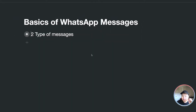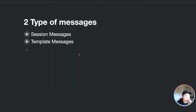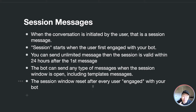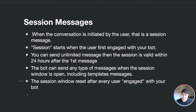WhatsApp messages are basically two different types. One is called a session message, and the other is the template message we're covering today. For session messages, the conversation is initiated by the user — for example, the user scans your QR code, sends a keyword, or clicks one of your ref URLs. That's when the session starts, and you have a 24-hour window to send unlimited messages, including both session and template messages.